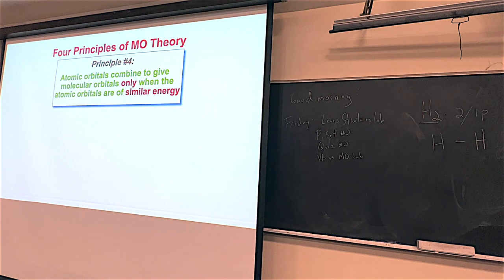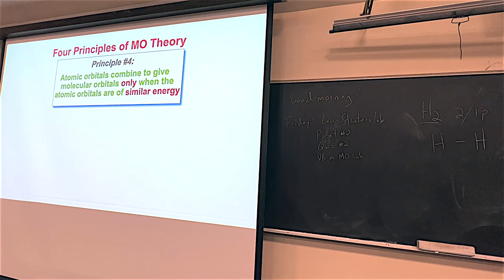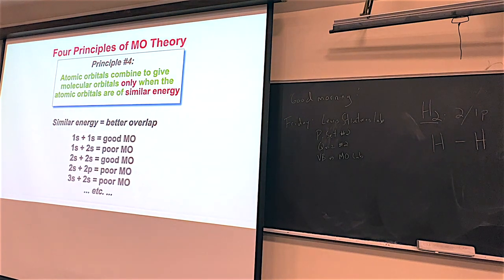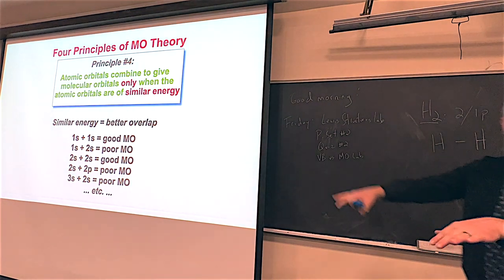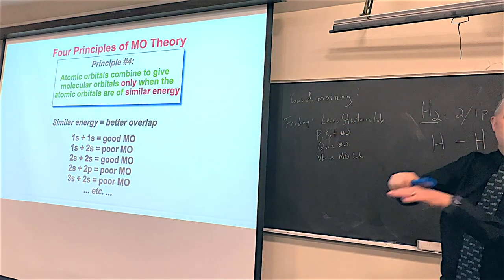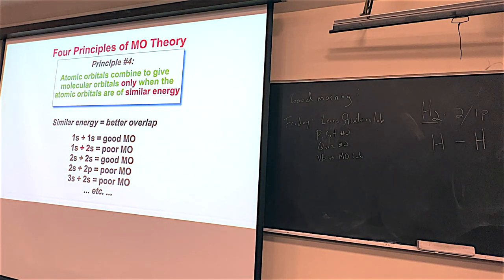Now the fourth principle — there are four big principles of MO, and this one is the most perplexing. Atomic orbitals will combine to make molecular orbitals only if they're at similar energy. If there's a big difference in energy, they won't make molecular orbitals. So 1s plus 1s: good molecular orbital diagram. But 1s and 2s — a 2s was quite a bit higher than 1s in Chem 221, so they wouldn't mix very well. But 2s and 2s is great. 2s and 2p: pretty bad. 3s and 2s: pretty bad too. They have to be similar energies.